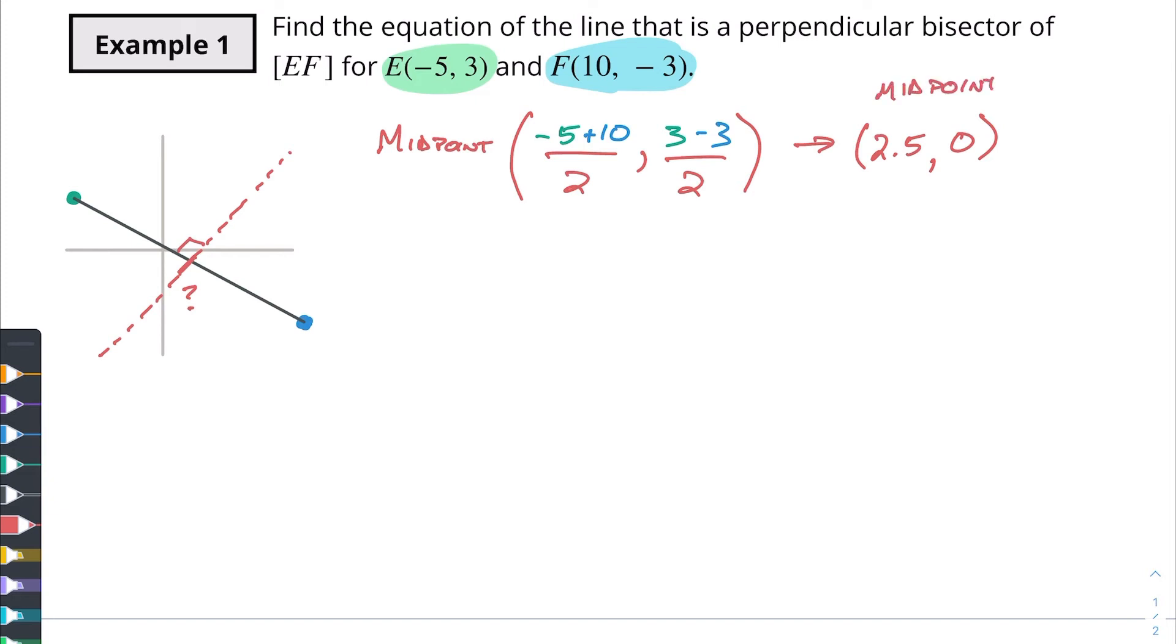So that is where this line is bisected. Now I need to find the slope of this line. The slope is going to be y2 minus y1 over x2 minus x1, so -3 minus 3 over 10 minus -5, so minus a negative 5 is going to be plus 5. So our slope for this is going to be -6 over 15, and both of those things are divisible by 3, so I'll have -2/5. So I've got a slope of my black line being -2/5. I've got the midpoint being (2.5, 0).